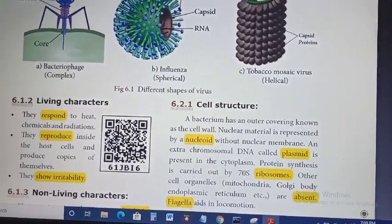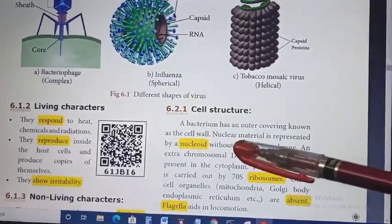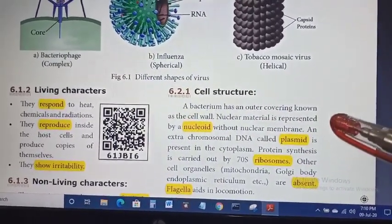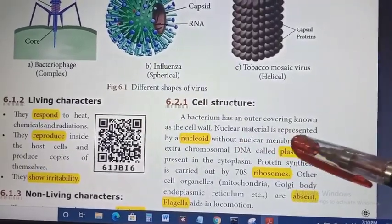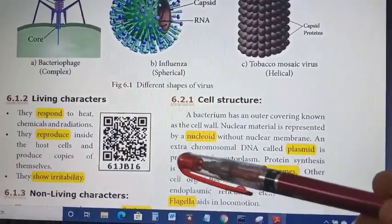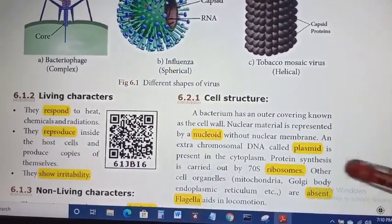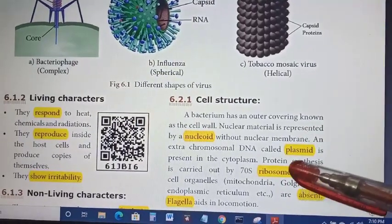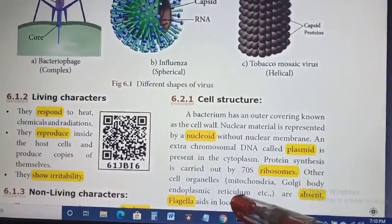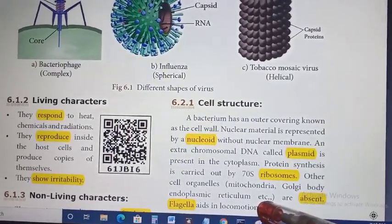In the structure of a bacterial cell, the outer covering is the cell wall. The nuclear material is represented by a nucleoid, that is without a nuclear membrane. Another important feature is the plasmid, that is extra chromosomal DNA. The only organelle present in bacteria is ribosomes. Other cell organelles like mitochondria, golgi body, and endoplasmic reticulum are absent. The locomotive organ of the bacteria is flagella.